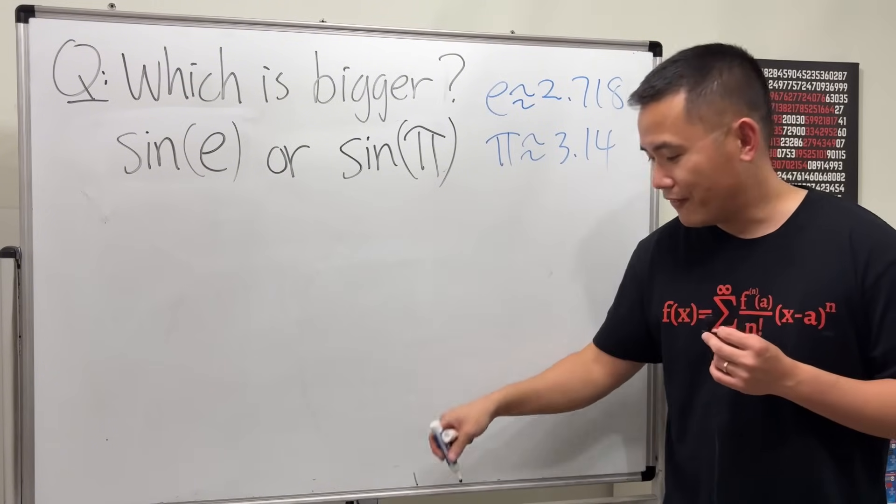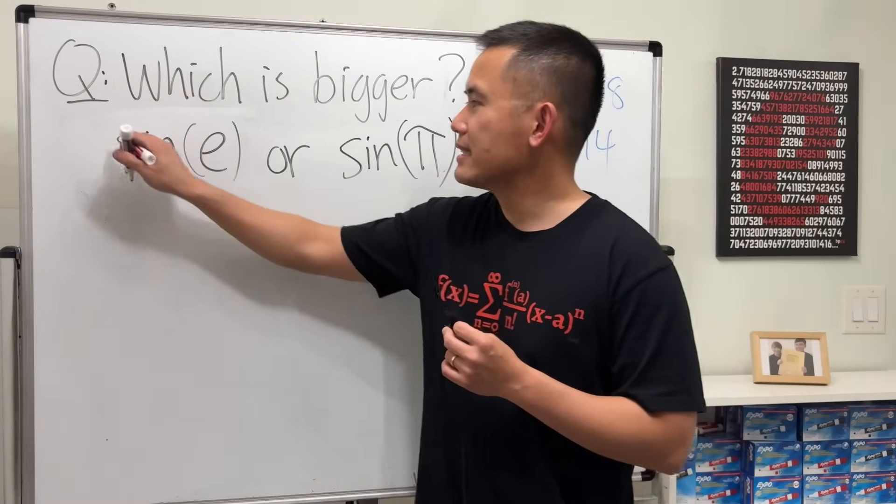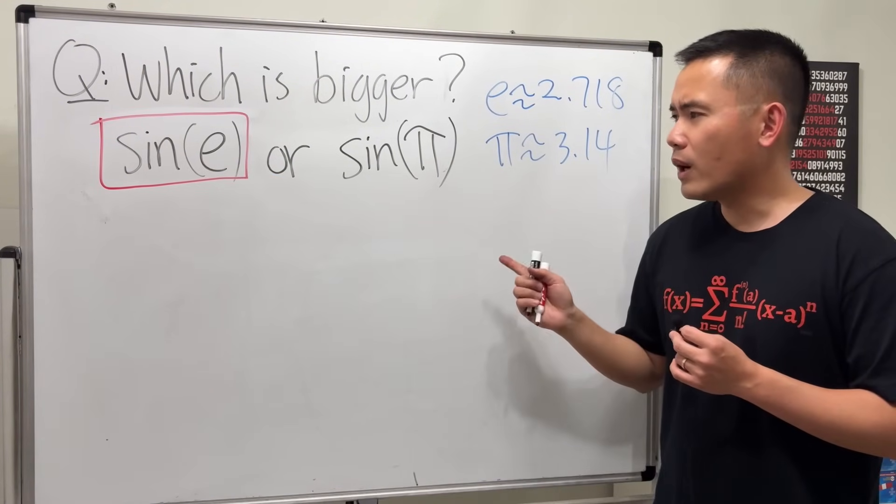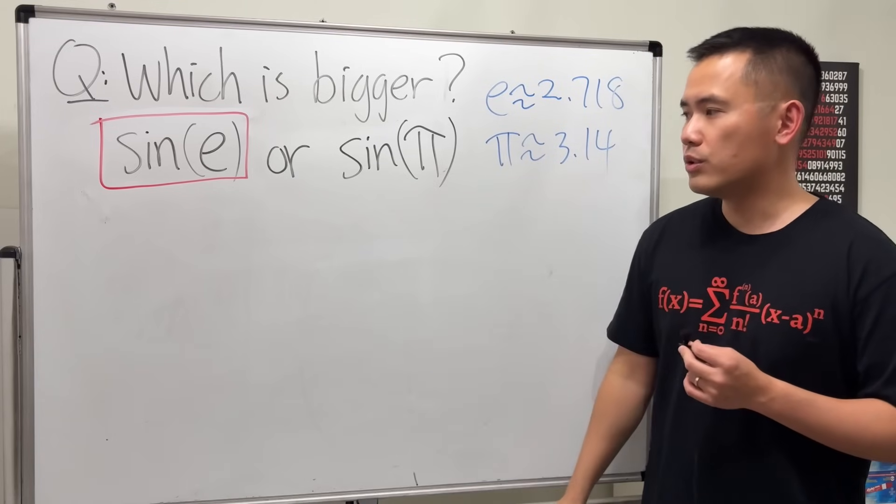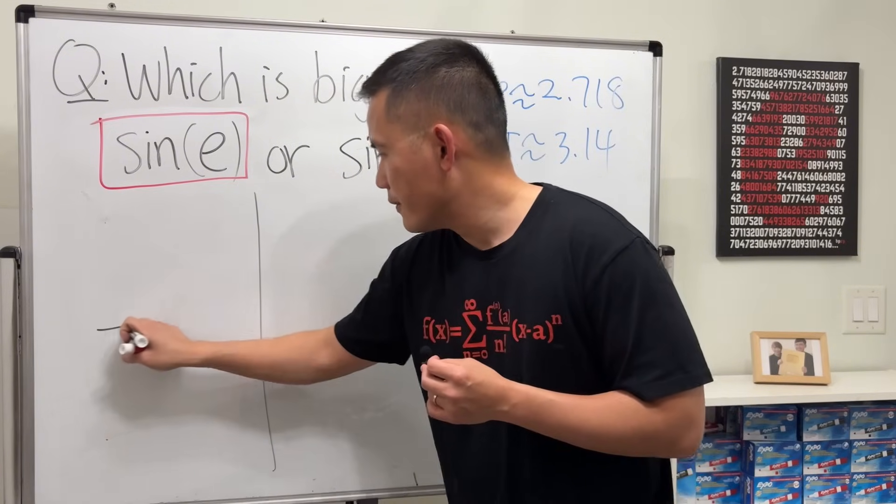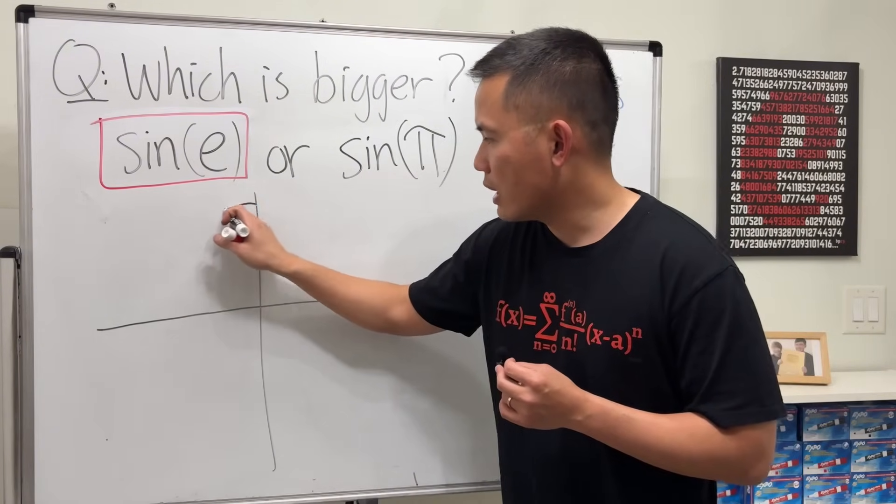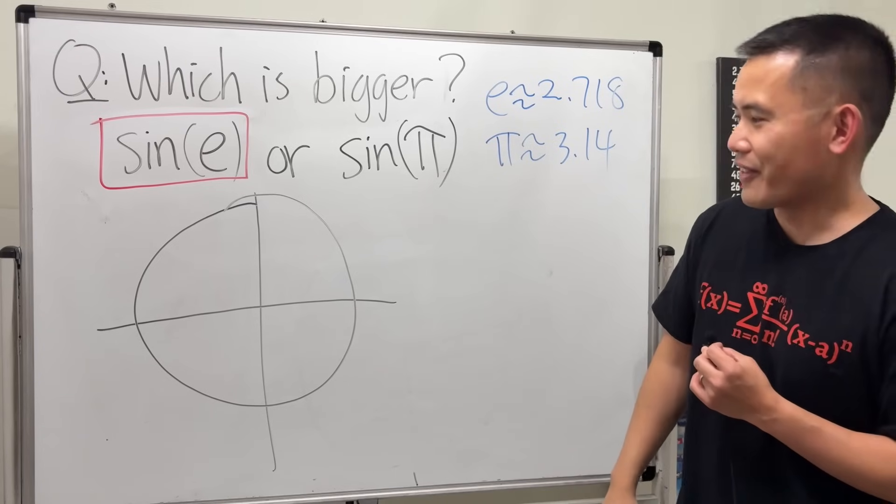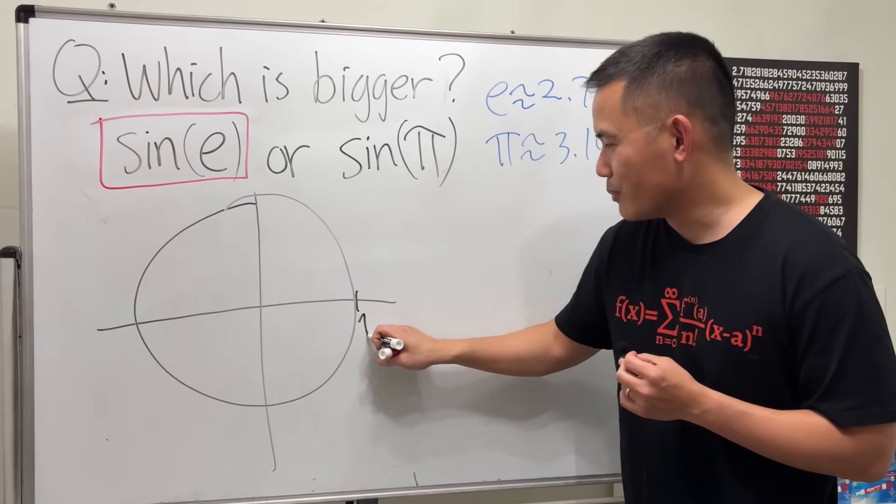No, in fact the answer is sine of e is bigger. And to see why that is the case, the best way for us to do so is to look at the unit circle. So let's have a look. I'll draw the unit circle right here. This is the unit circle.